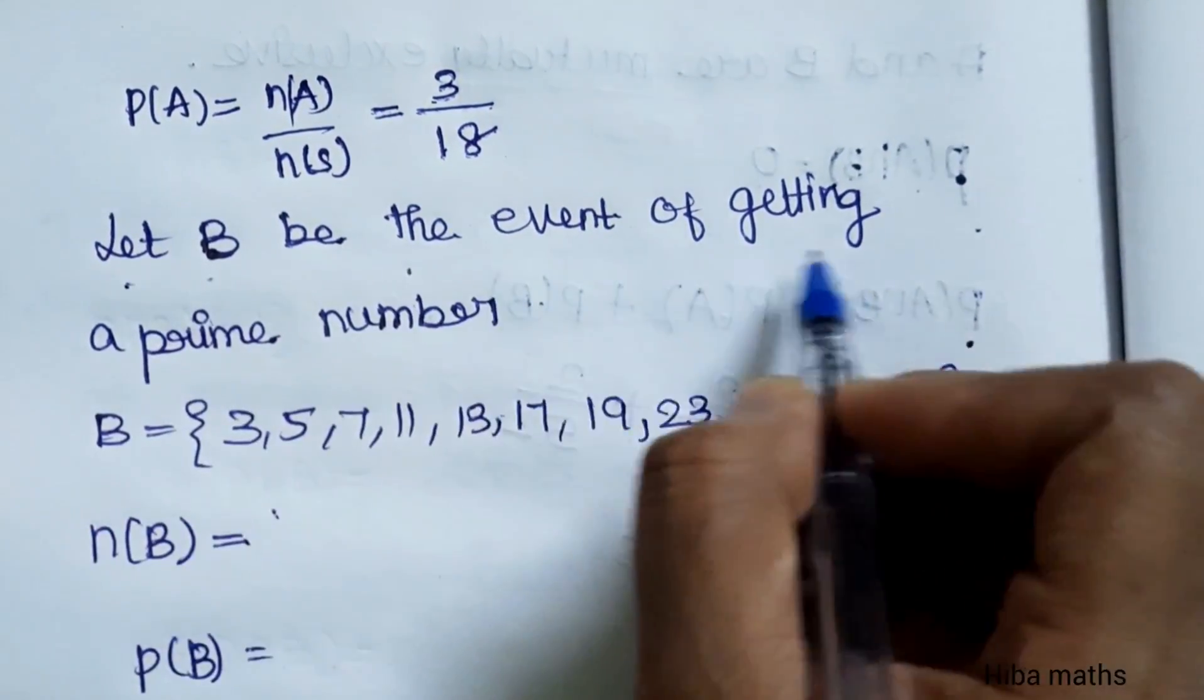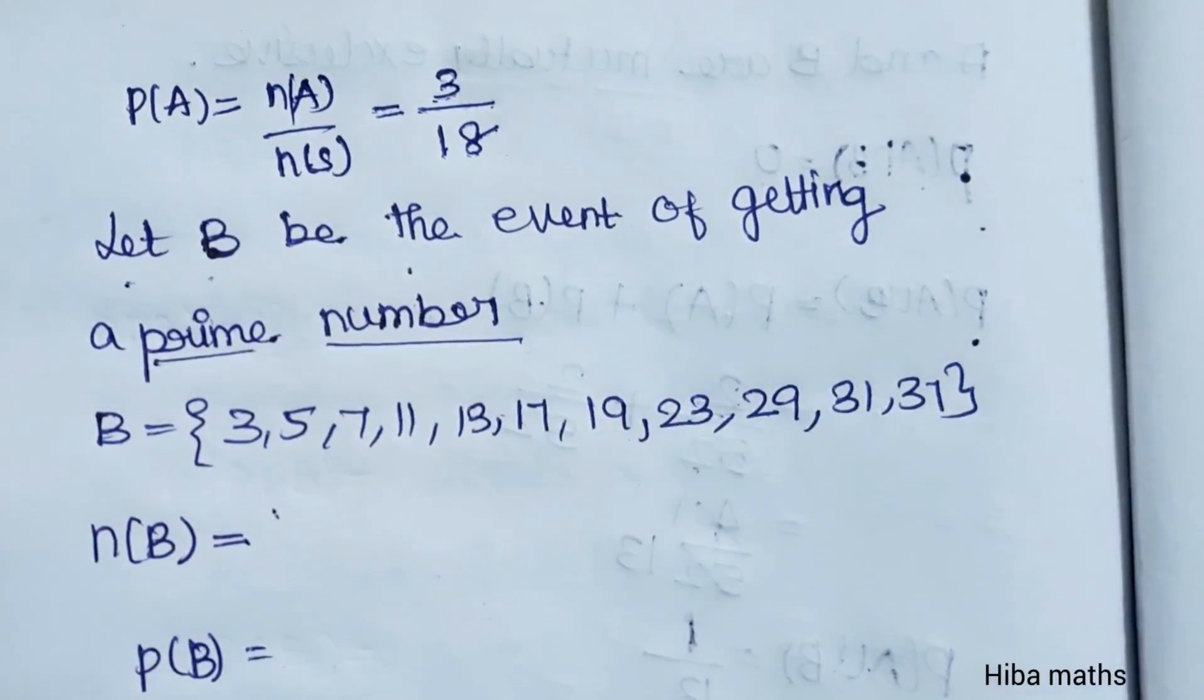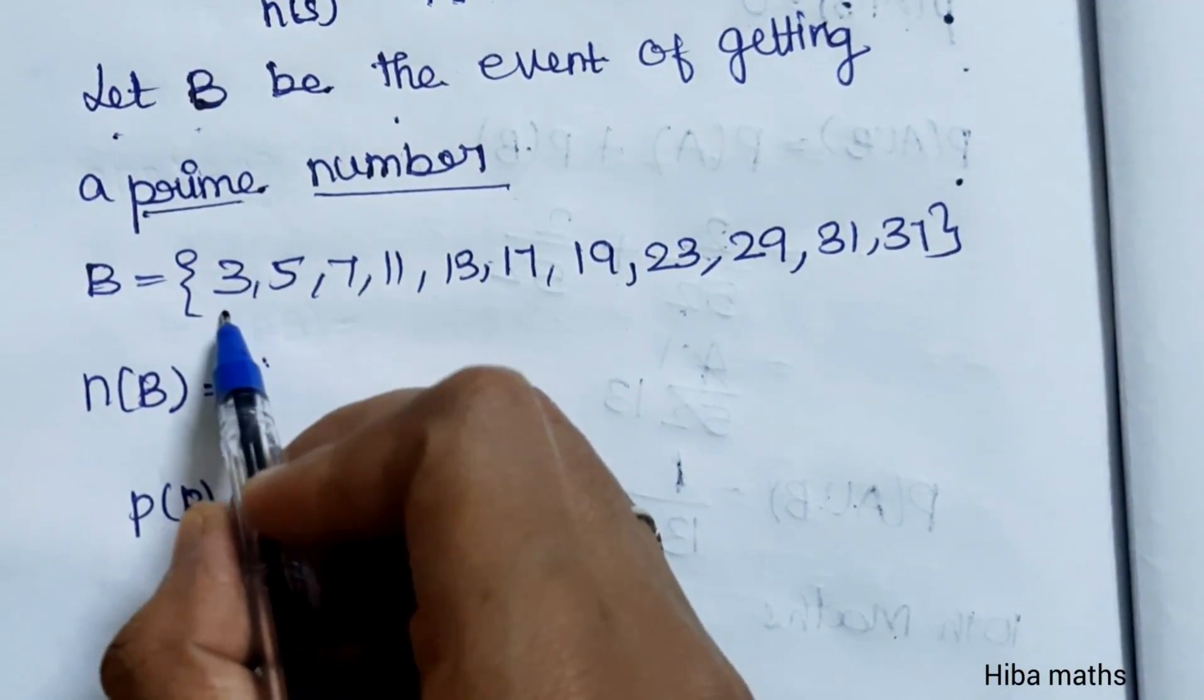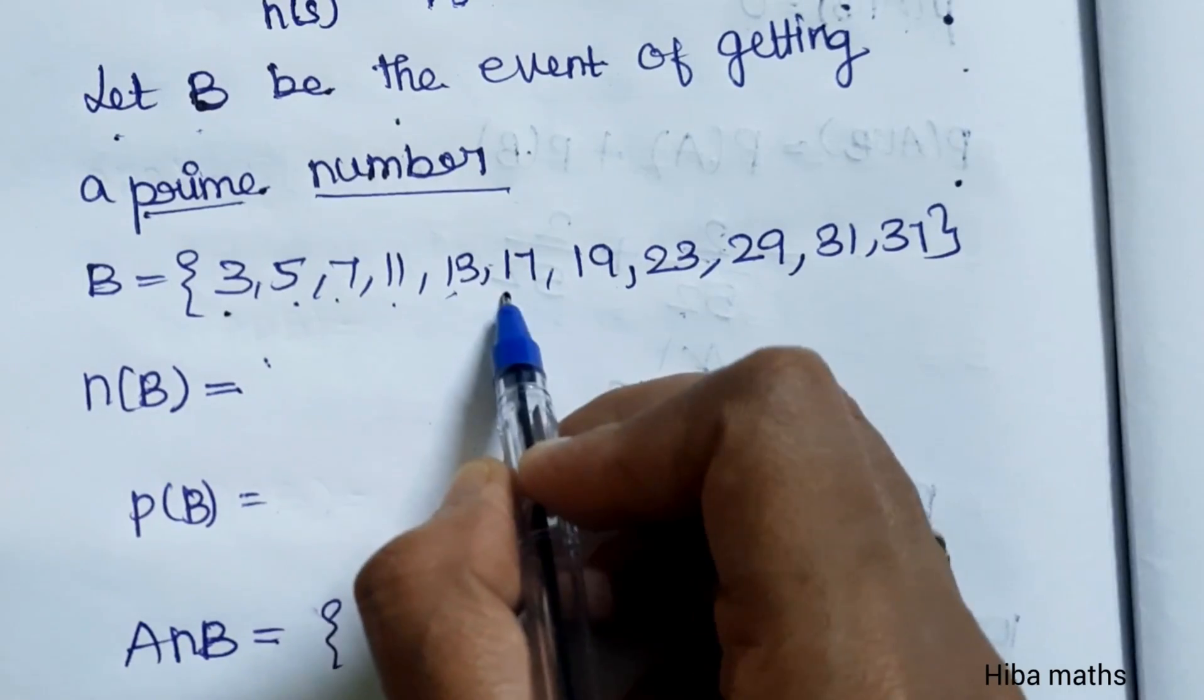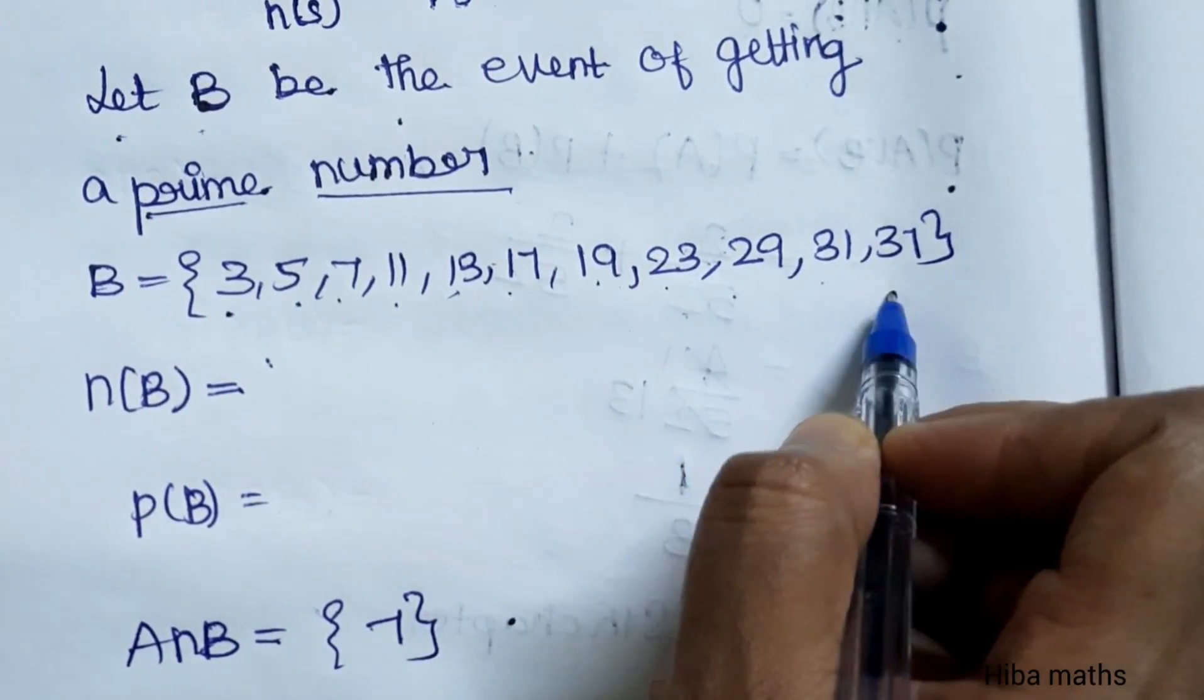Let B be the event of getting a prime number. Prime numbers are: 3, 5, 7, 11, 13, 17, 19, 23, 29, 31.